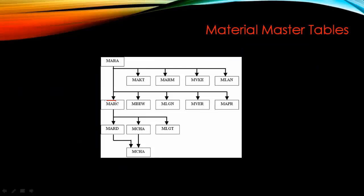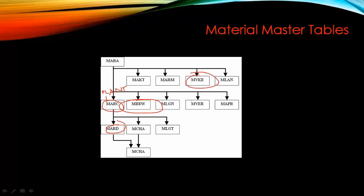Other important material master tables include: MARC, which stores plant-specific data — MRP 1, MRP 2, MRP 3, MRP 4 tabs — and this data can differ per plant for the same material. MBEW stores costing and accounting-related data. MARD stores storage location data. MVKE stores sales area data. These are the important tables used in material master.